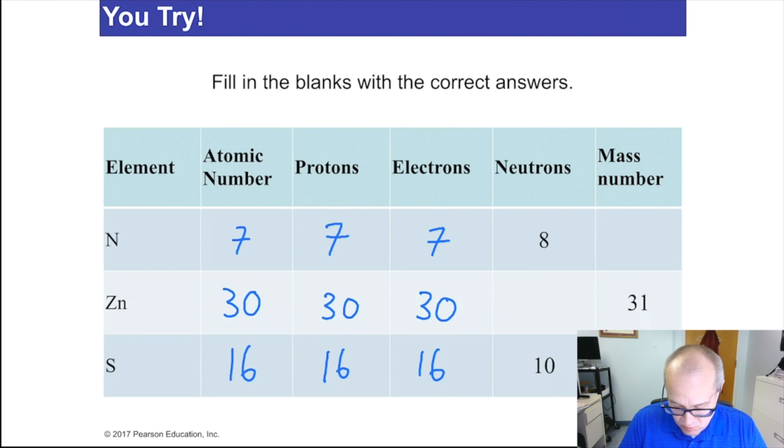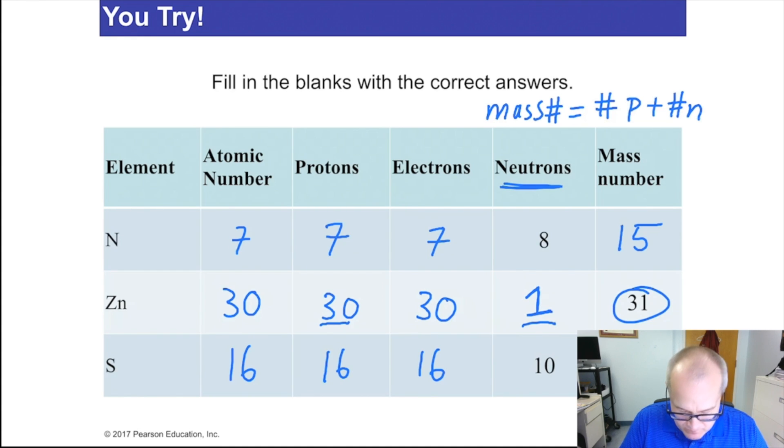Now we've got to figure out mass number. Mass number equals the number of protons plus the number of neutrons. I'm told the number of neutrons right here. So for nitrogen, it's 7 plus 8 equals 15. That's the mass number of this atom of nitrogen. For zinc, we know the mass number and we know the protons, so there must be 1 neutron. 30 plus 1 is 31. And finally, we have sulfur. Protons are 16, neutrons are 10, so the mass number must be 26. That's how you'd figure that out.